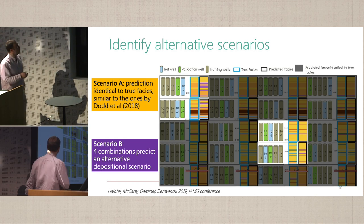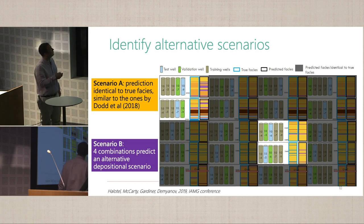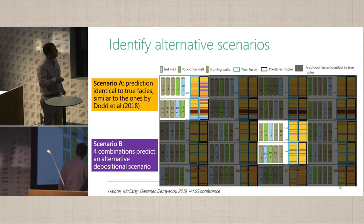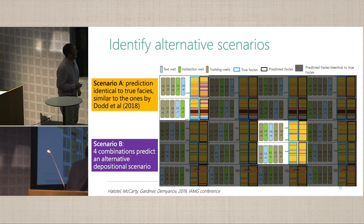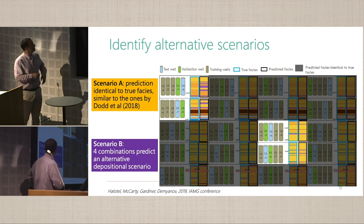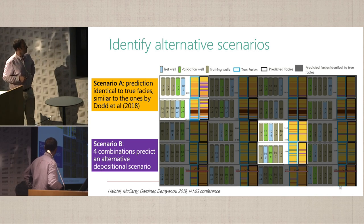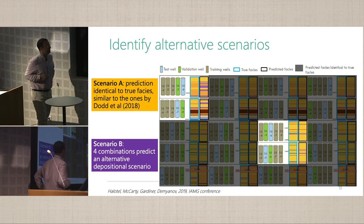We only had five wells, so we trained on three, used one as validation and one as the test well. Iterating through combinations, we end up with 20 answers, all slightly different. Most of them give scenario A — the base case considered by the BGS interpreter — but four scenarios identified the purple hybrid event beds, highlighting intervals with worse reservoir quality.